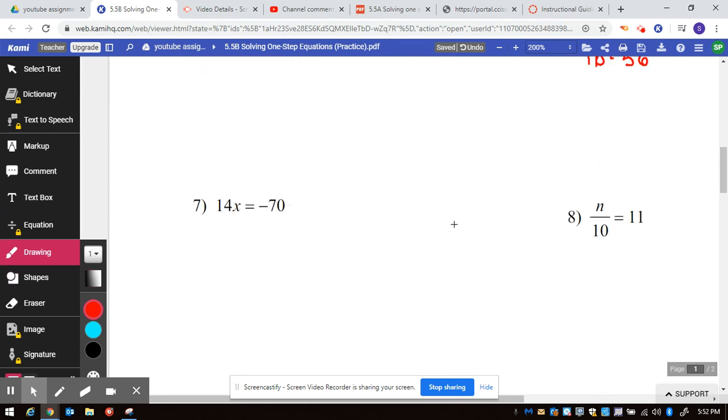And the last one, number 9, this one says v, and it's dividing by 11. So the opposite of divide is to multiply, because 11 divided by 11 is 1v.